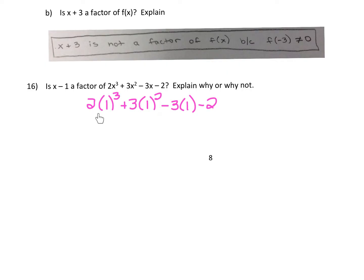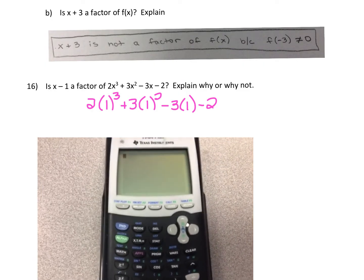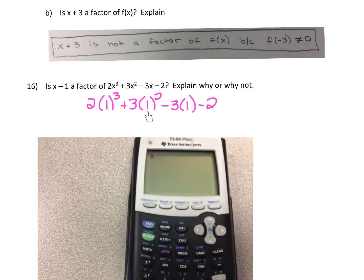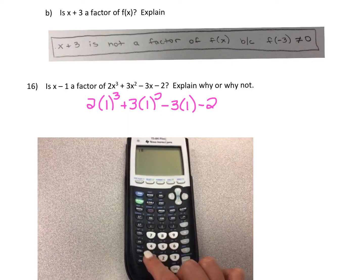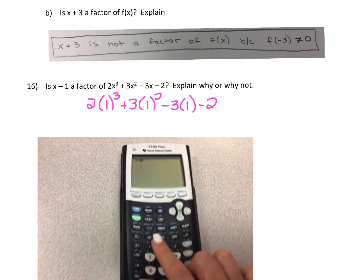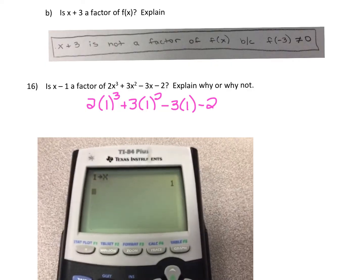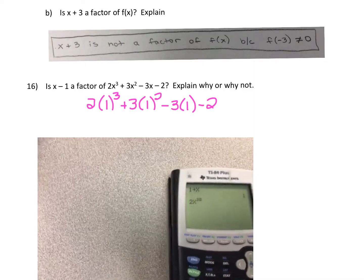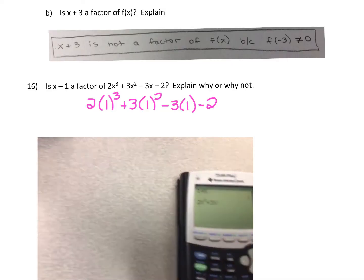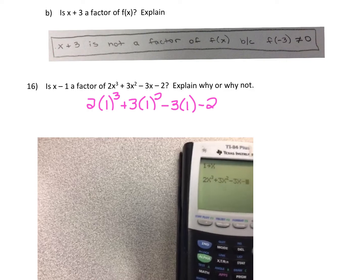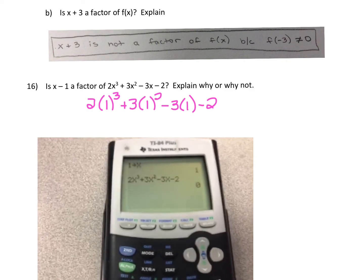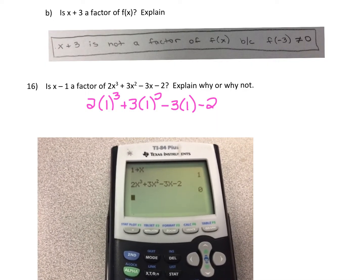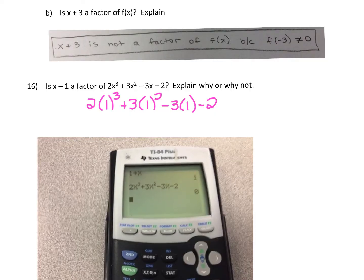If you decide to use the calculator, you still need to show this work on your paper — this shows what you substituted in for x. We're storing x as positive 1: type 1, hit the store button above the on key, then hit x and enter. Anytime you hit an x, your calculator represents the number 1. Now type in 2x³ + 3x² − 3x − 2 and hit enter. This tells you that when you substitute 1 in for all of these x's, the expression is equal to 0.